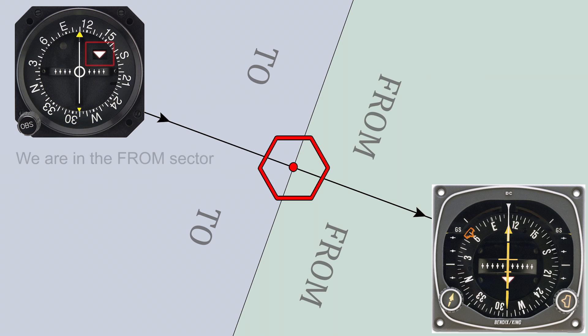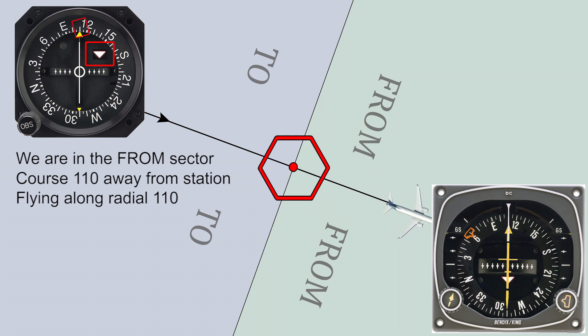If the flag is showing a from indication, a turn to the indicated course on top will lead you away from the station on the radial that is also indicated on the top.